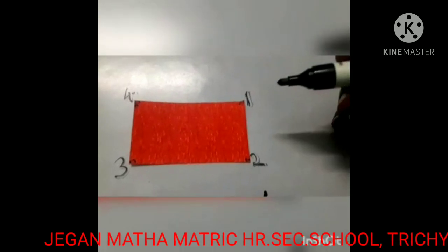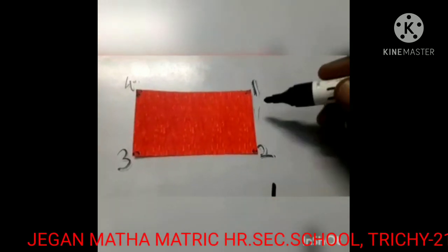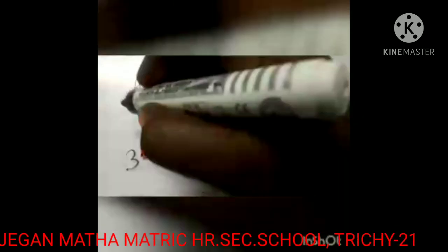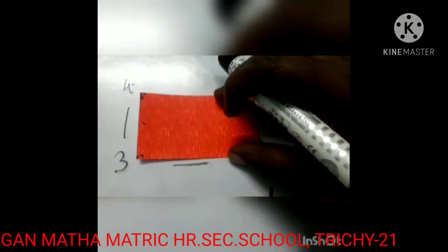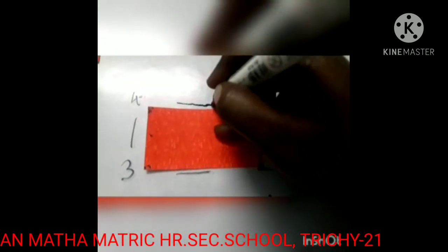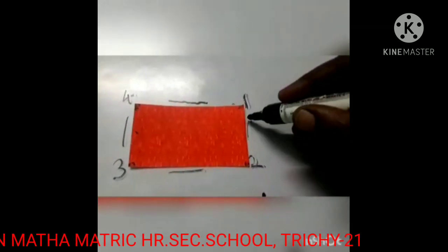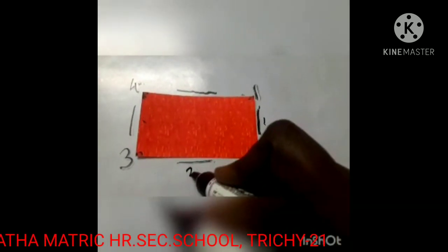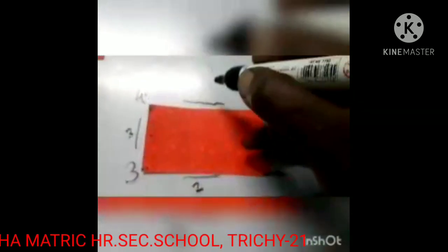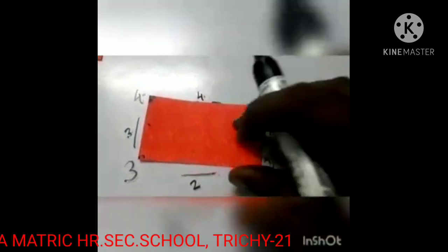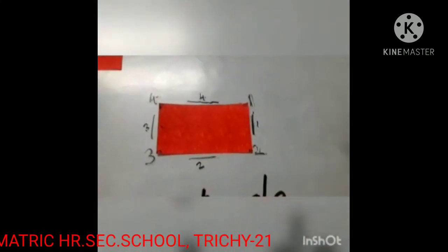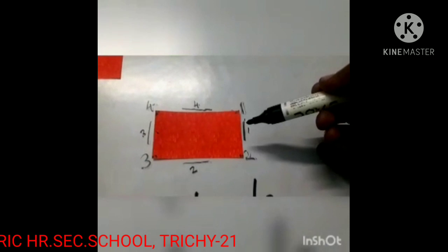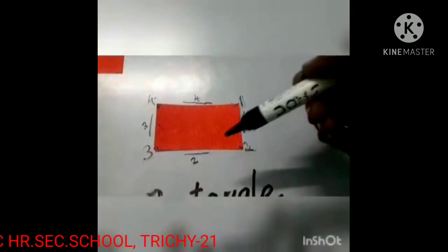Let's check the sides. How many sides? One, two, three, four. How many sides? Four sides. One, two, three, four. So how many corners and sides? Four corners and four sides. Rectangle has four corners and four sides.